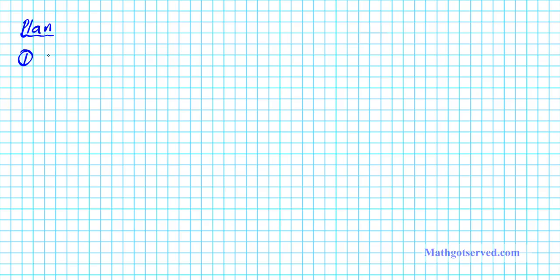Before we get started with the proof, let's go ahead and review the plan of attack. The plan basically outlines the steps that we have to go through to execute the proof by mathematical induction. It can be broken down into three parts. The first part is the base case. For the base case, in this proof we're going to be showing that the statement is true for all n in the set of integers. We just have to show that n equals 1 is true. We're using 1 as the starting value of n because 1 is the smallest positive integer.